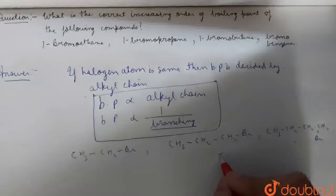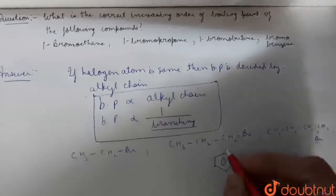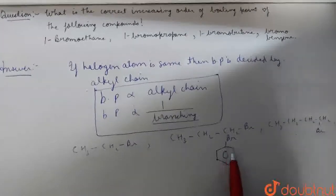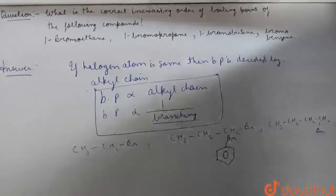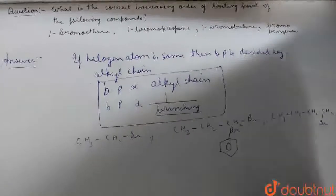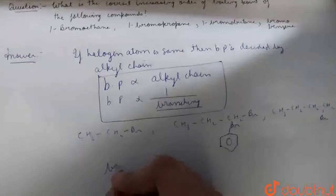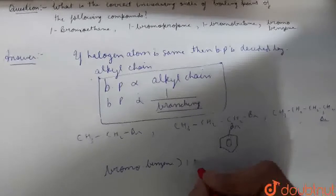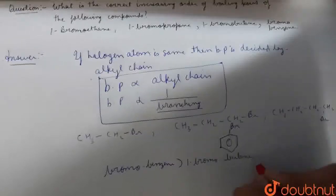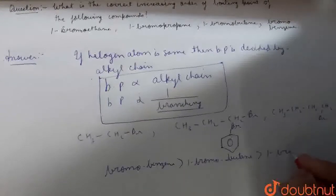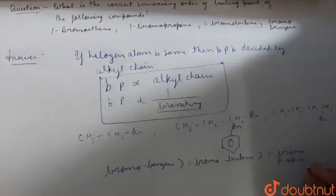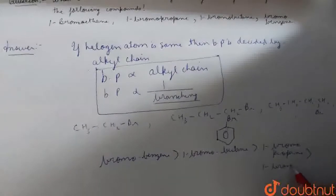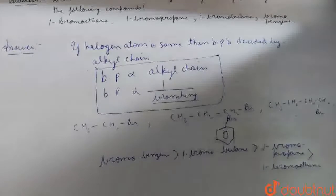Then you have benzene-like ring coming, and the ring has more carbon atoms, so it is obvious that the boiling point is growing. This is the most important. After ordering, we have 1-Bromoethane, then 1-Bromopropane, then 1-Bromobutane, and then Bromobenzene with the highest boiling point.